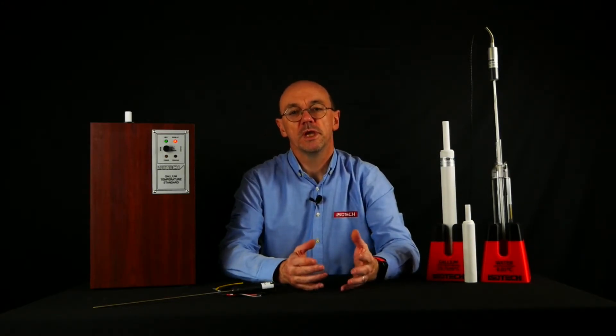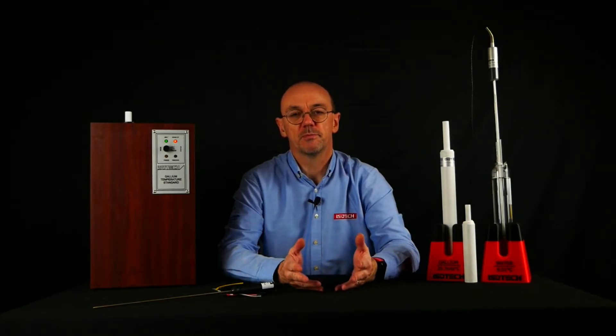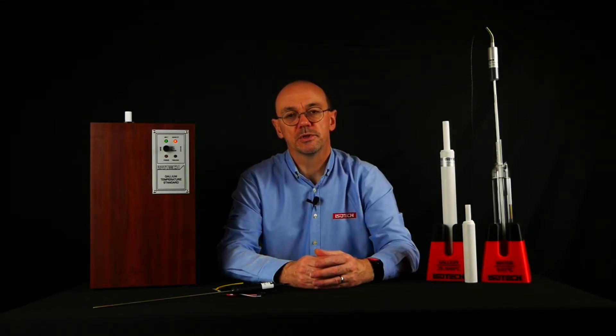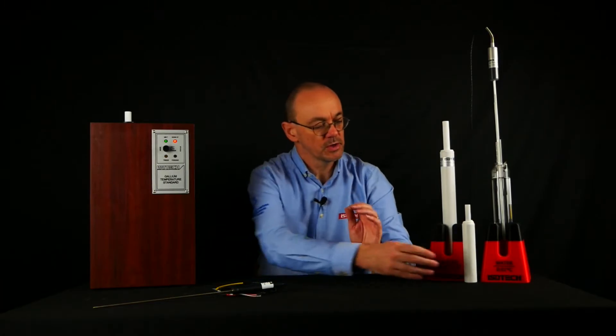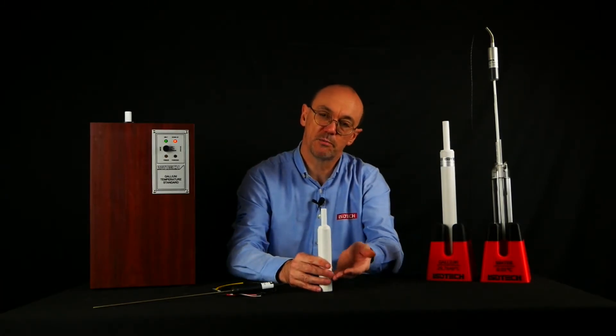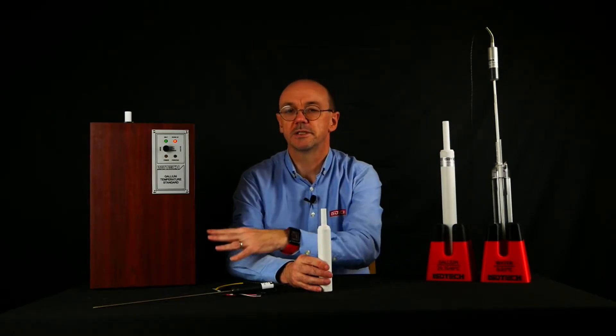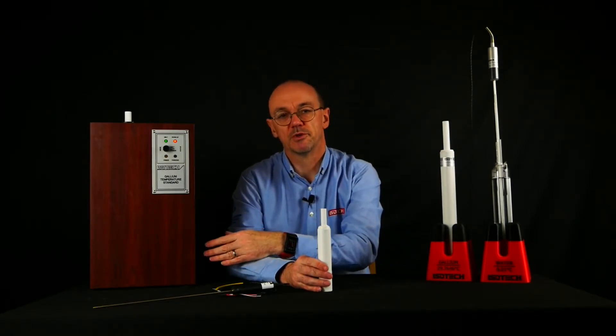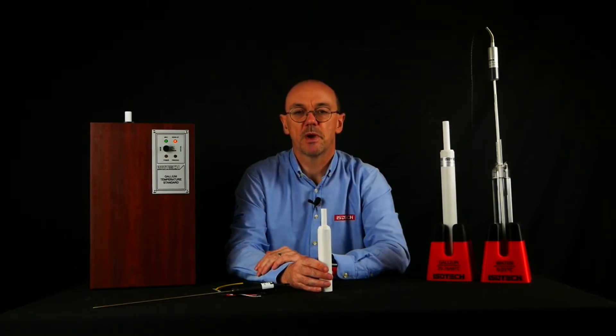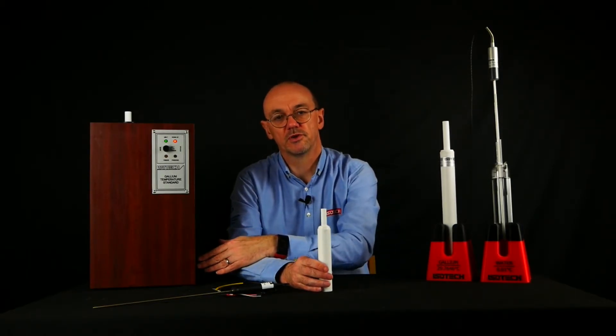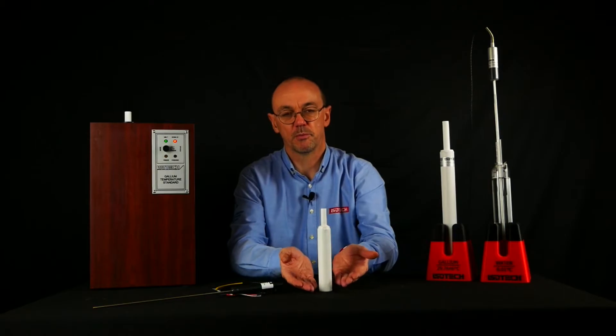When gallium freezes, it expands by about three percent. So it's important that the cell is arranged so it freezes from the bottom up to avoid stressing and rupturing the cell. With the Isotech apparatus, that happens automatically, and even with power failure the apparatus ensures the cell is frozen from the bottom up.